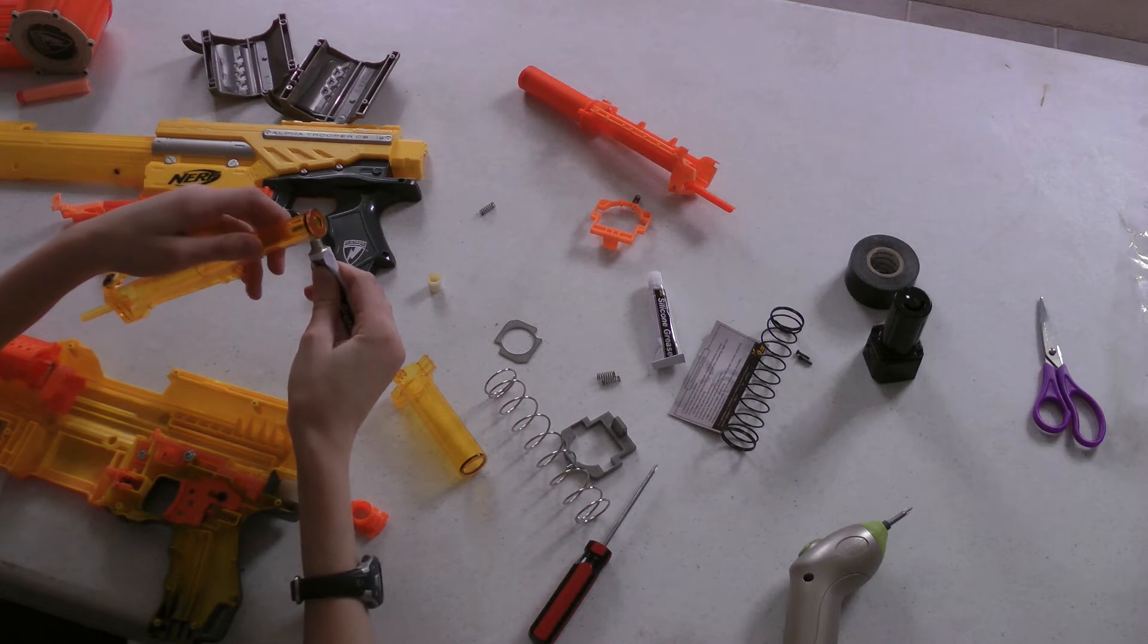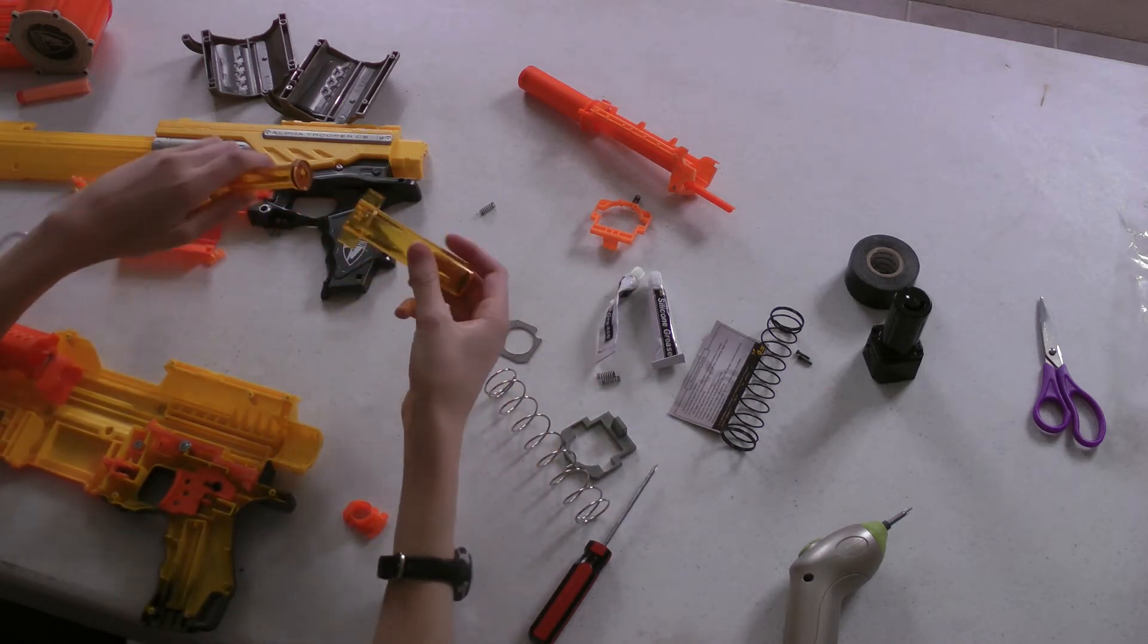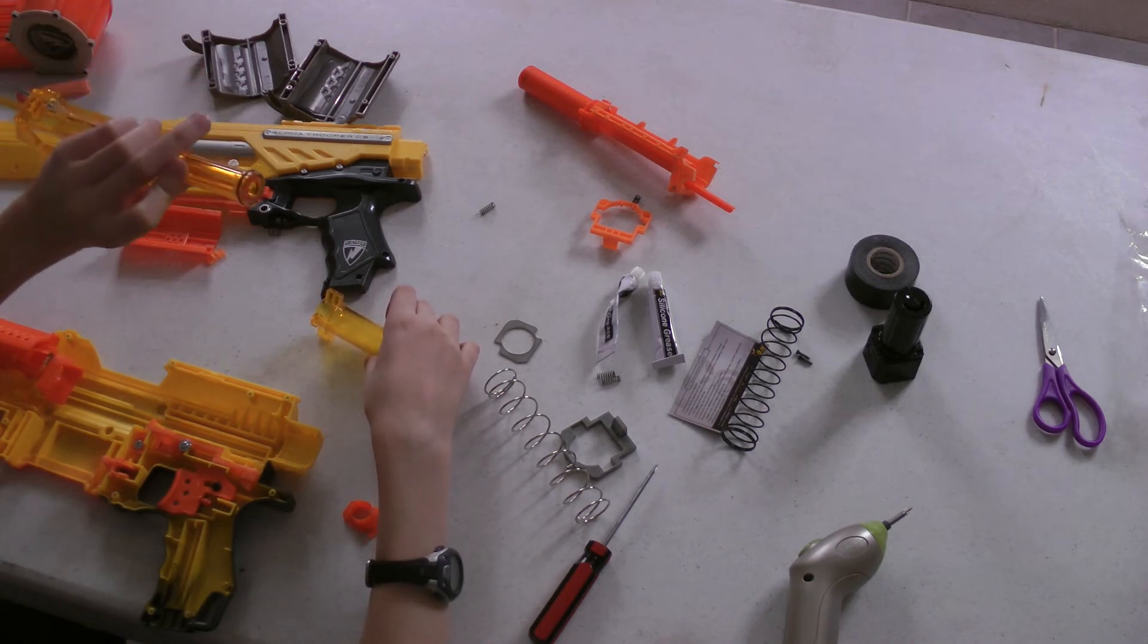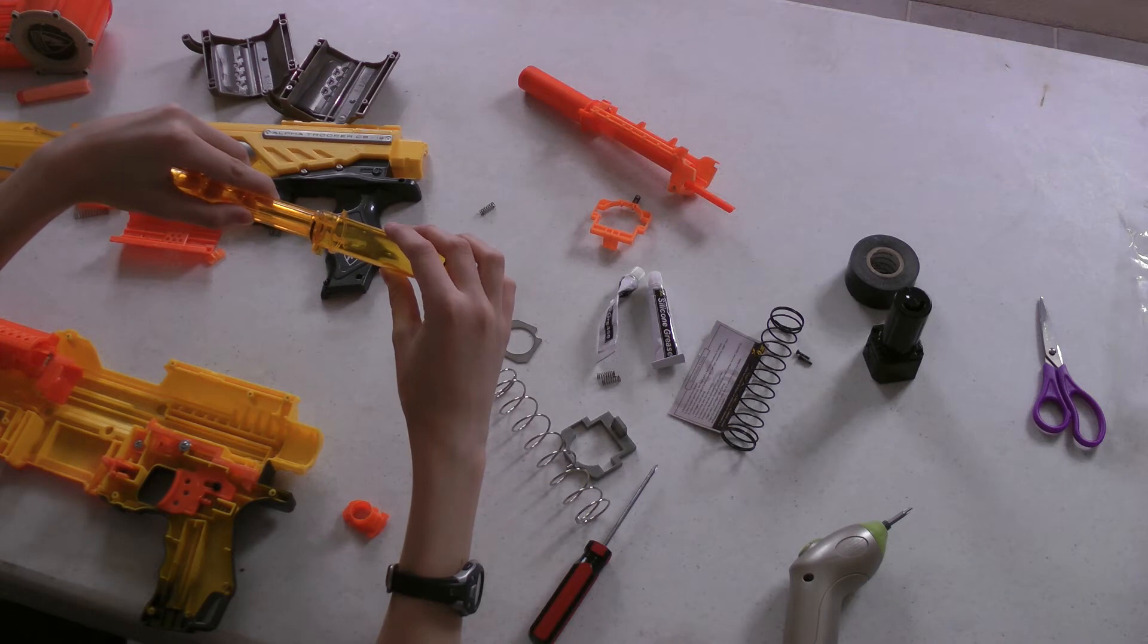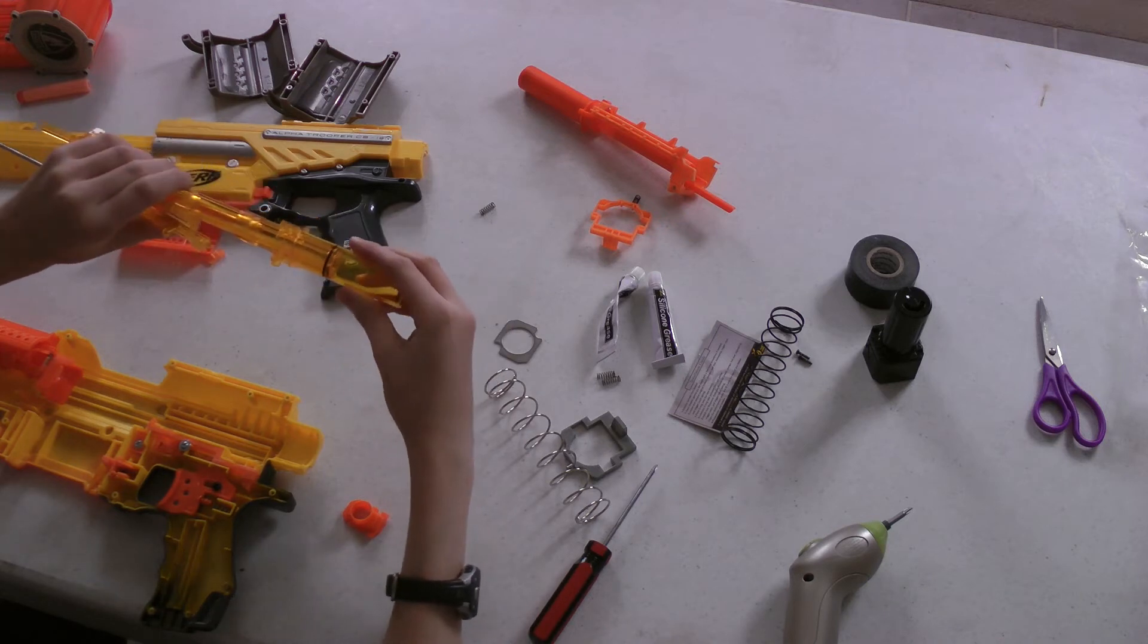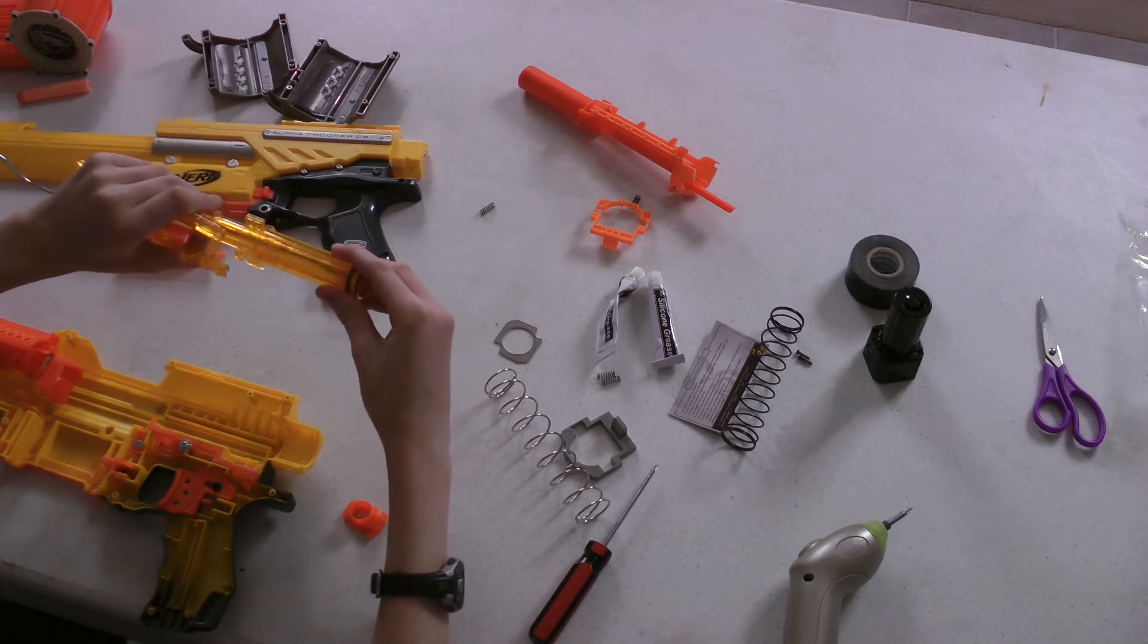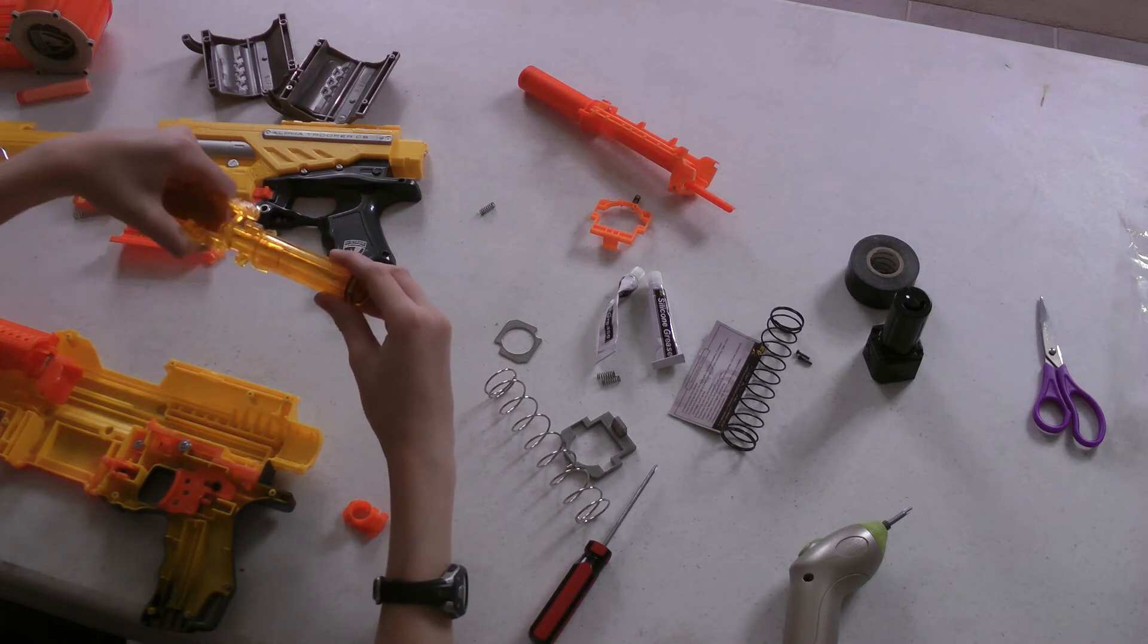Let's put some silicone grease around this O-ring right here. Put a lot on. So I put a lot on, as you can probably see. So now you're going to stick it through there. Get it around. Push it down.